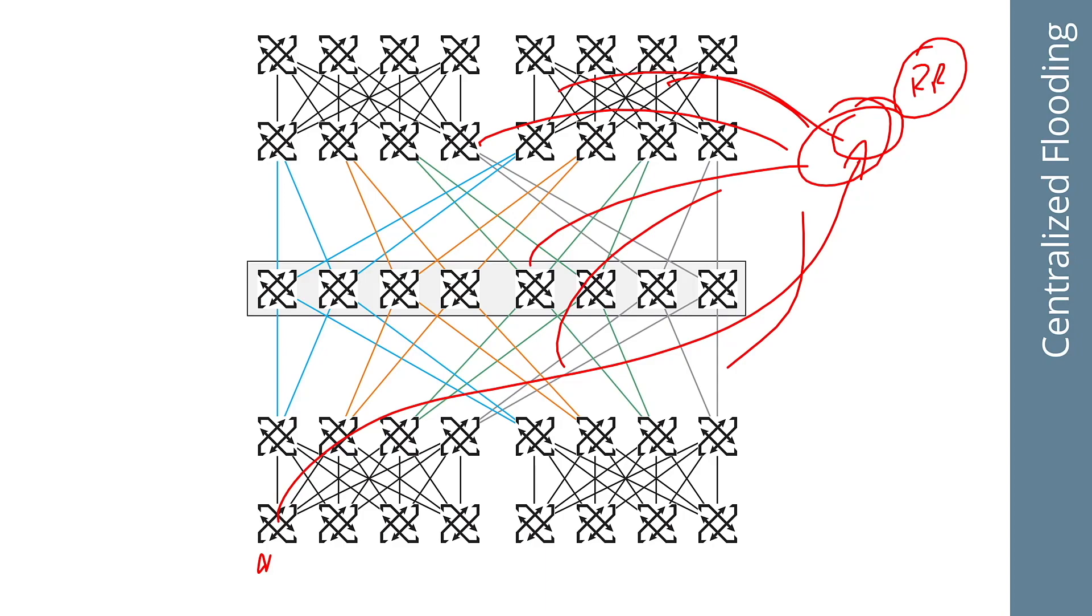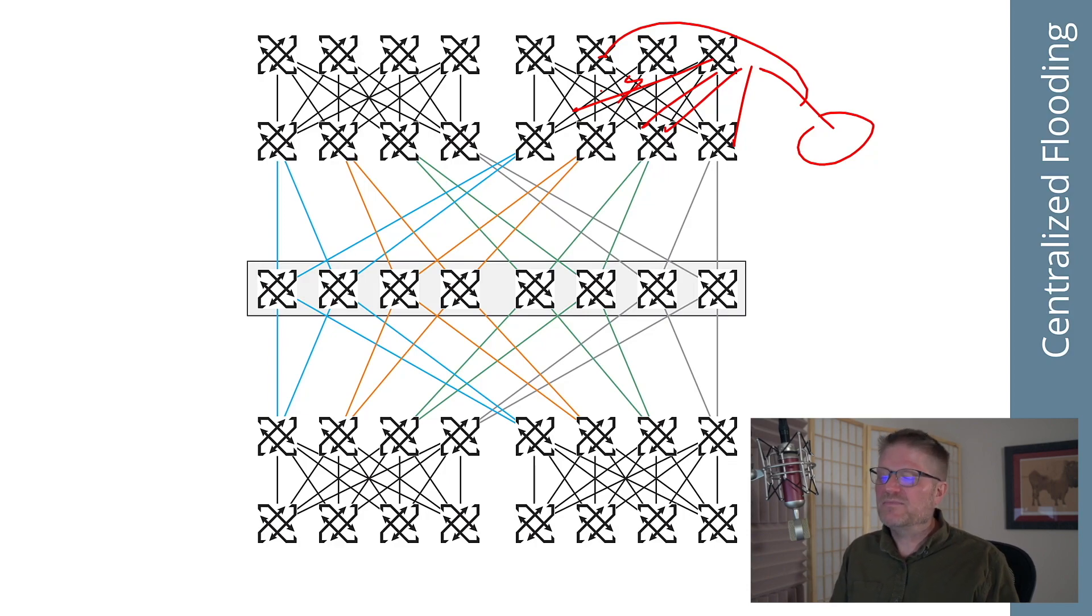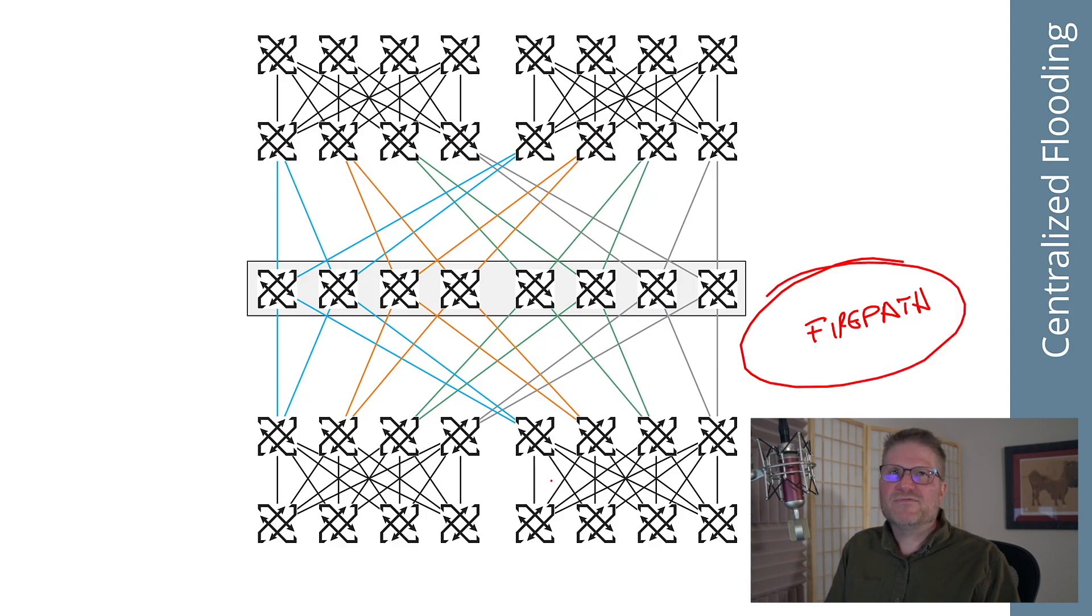The flooding leader does not run SPF and calculate the best paths. It just calculates the optimal set of devices to flood to. It can calculate what's called an optimal flooding tree from its centralized location and say if I flood here, I know he'll reflood to these. I can actually pick a set of devices to flood to and tell them who to reflood to, to only allow every device in the network to receive one copy of the changed LSP. There's a draft for this in the IETF. You can look up Tony Lee and find his draft. There is also a paper written by Google called Jupiter Rising that describes a system called FirePath that uses the same sort of mechanism of a centralized flooding leader.